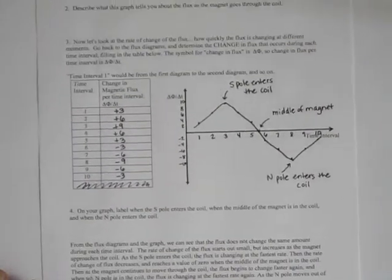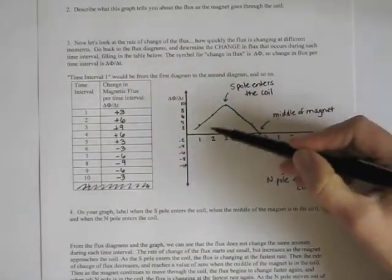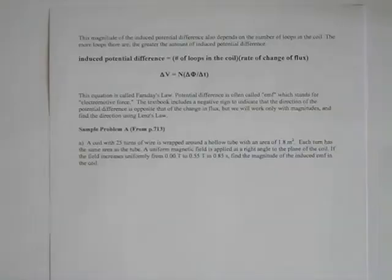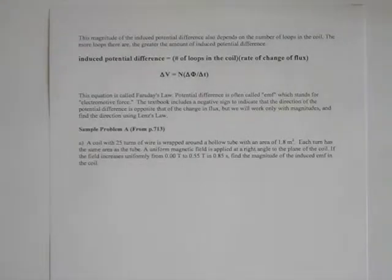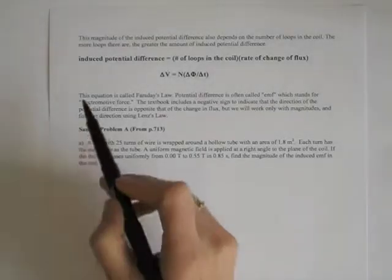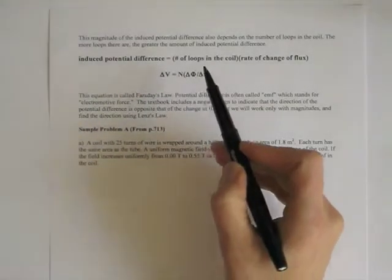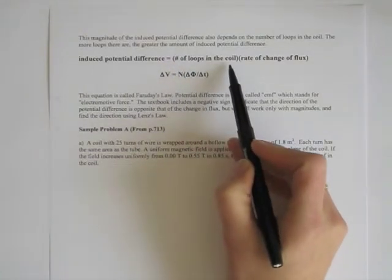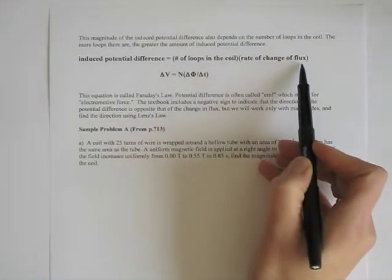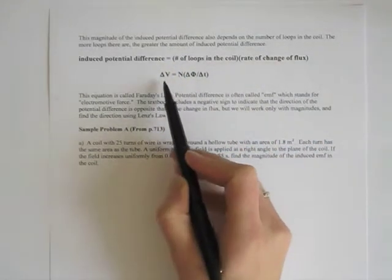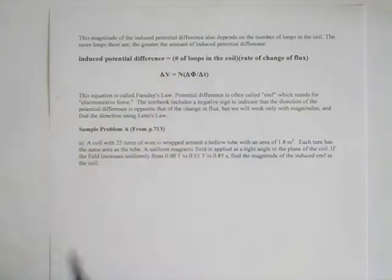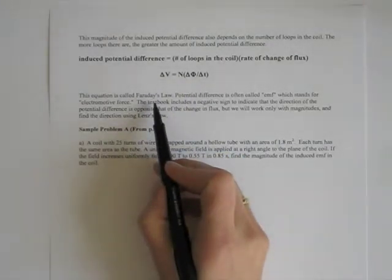The induced potential difference is proportional to the rate at which the amount of flux is changing. The magnitude of the induced potential difference also depends on the number of loops in the coil — the more loops there are, the greater the amount of induced potential difference. This gives us the equation: induced potential difference equals the number of loops in the coil times the rate of change of flux, or in symbols, EMF = N × (Δφ/Δt). This equation is called Faraday's Law.